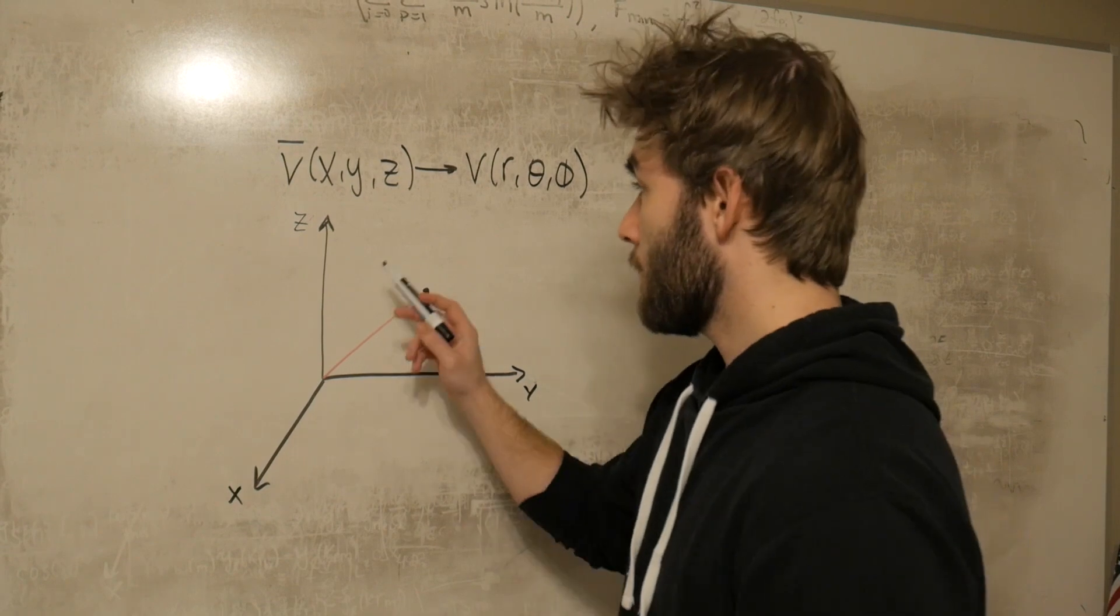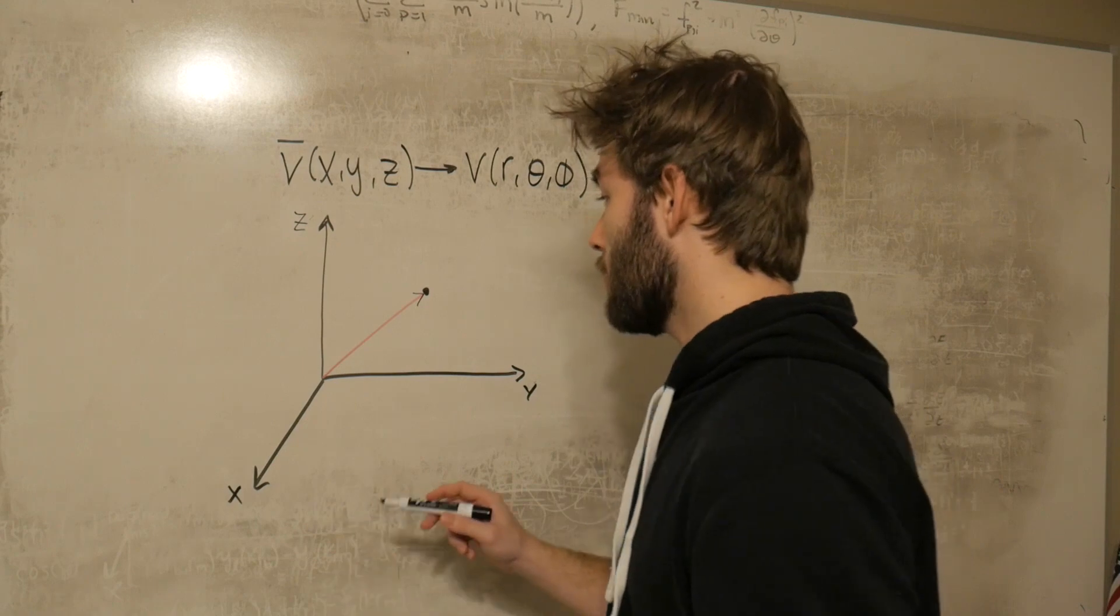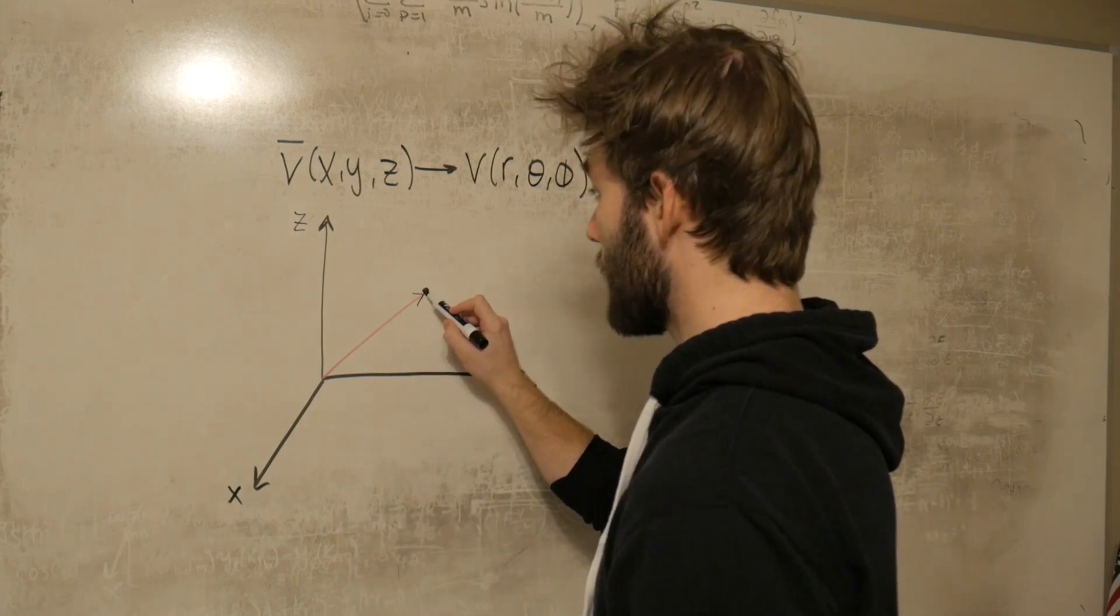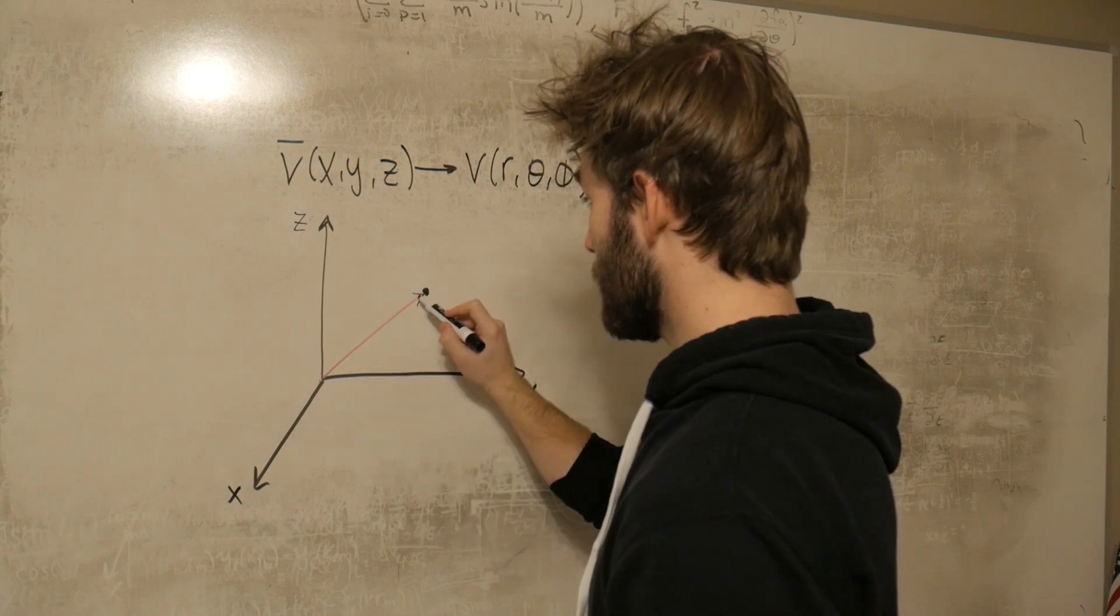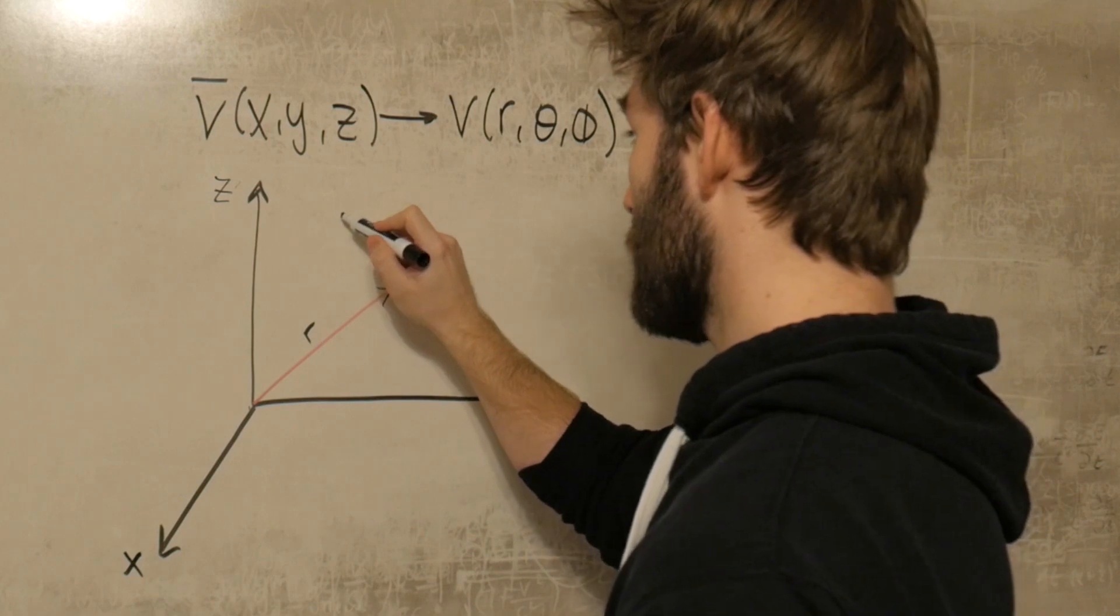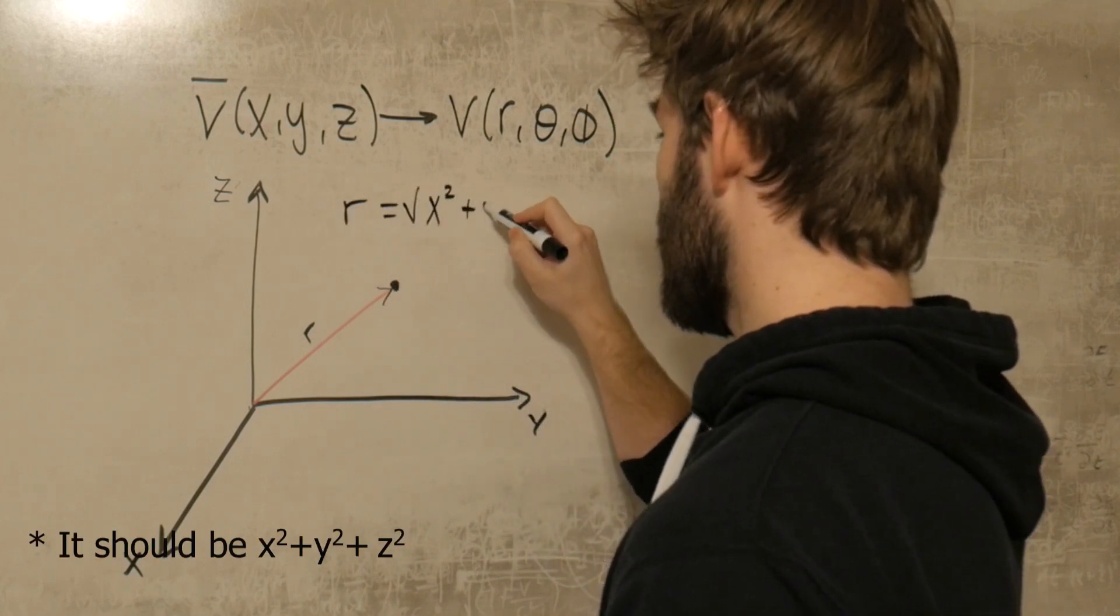A superposition of those vectors will give you the location of that point in space. Now that's nothing new, but there's another way of expressing this, in which case we can talk about the magnitude of the distance between the point and the origin that we call r. So if we're calling it the magnitude, what we're saying is that r is equal to the square root of x squared plus y squared.